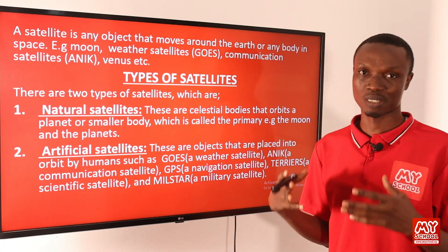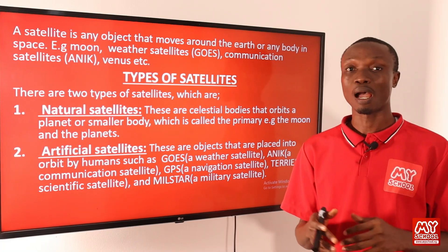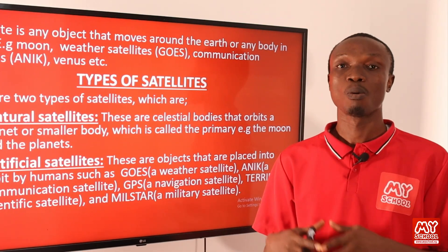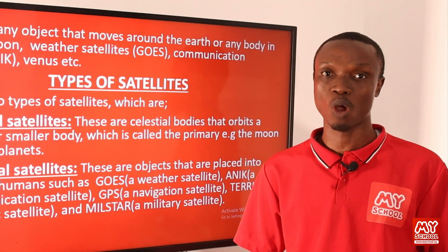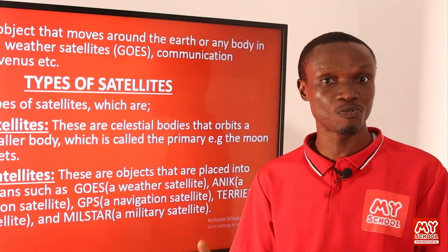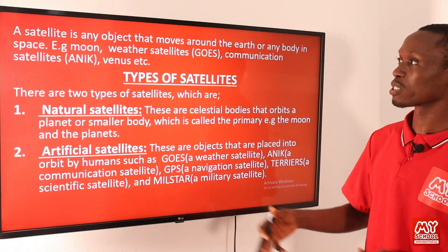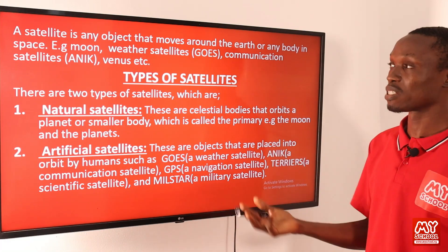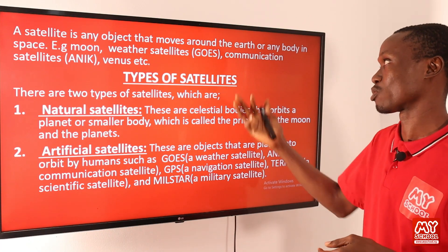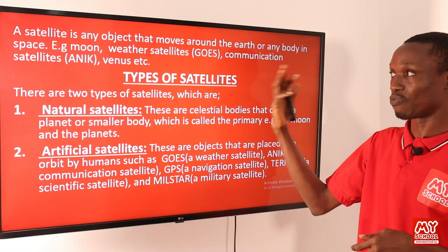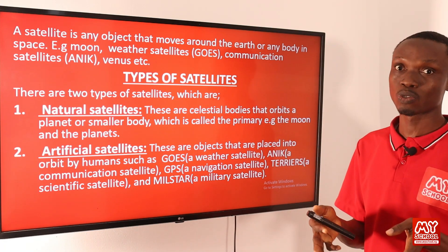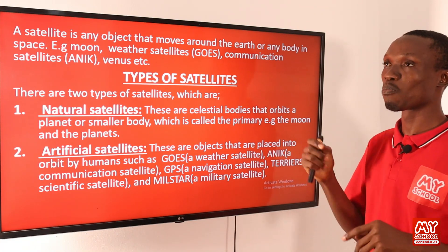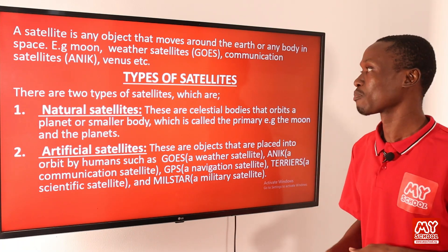Before we begin with the meaning of satellite, it is important to know that rockets and satellites are part of the very important and exciting technological advances of the modern world. Both rockets and satellites are mostly often linked to one another, as rockets are used to lift or transport satellites to space. A satellite is any object that moves around the earth or any body in space. Examples of satellites are the Moon, weather satellites such as GOES, communication satellites, and Venus, since Venus as a planet moves around the Sun.